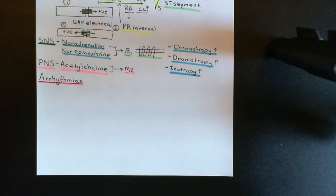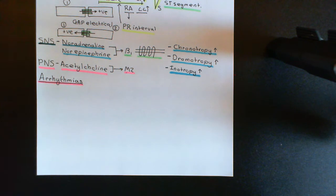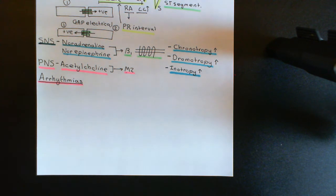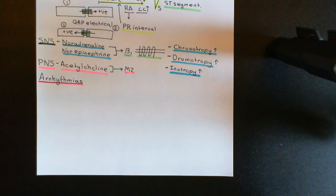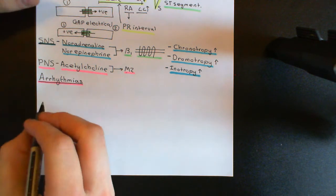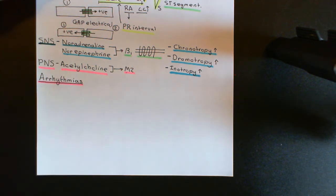Welcome back to this next video in which we are discussing cardiac arrhythmias. We're now going to start discussing the broad classification of arrhythmias into the different types. The most logical one to begin with is the separation of supraventricular arrhythmias from ventricular arrhythmias. Then what we'll talk about is bradycardia and tachycardia, which is another way of classifying arrhythmias.